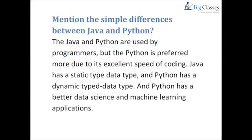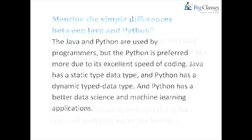Mention the simple differences between Java and Python. Java and Python are both used by programmers, but Python is preferred more due to its excellent speed of coding. Java has a static type data type, and Python has a dynamic type data type. Python also has better data science and machine learning applications.